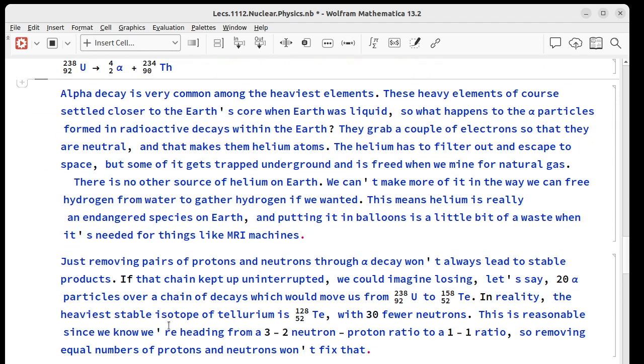Alpha decay is really common for the very heaviest elements. These are the ones that settled close to the Earth's core when the Earth was liquid. So what happens when there's radioactive decay in the center of the Earth? Aside from it keeping the Earth warm for billions of years so far, these alpha particles will grab a couple of electrons to neutralize themselves and that'll make them helium atoms. The helium would like to get out into space, but it's stuck underground a lot of times and it gets freed when we go looking for natural gas. There is no other source of helium on Earth and we can't make it, at least until fusion is developed.